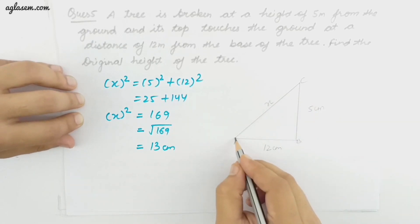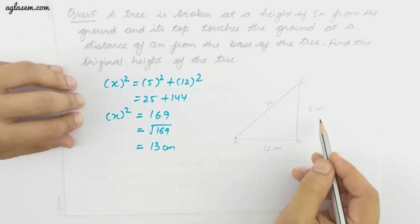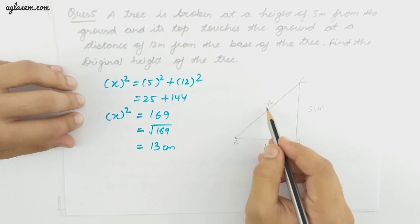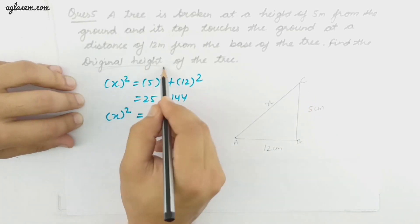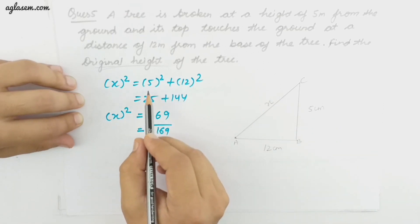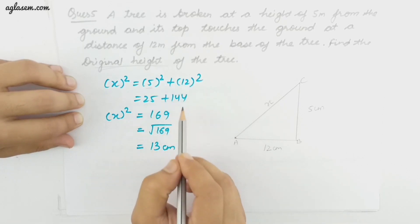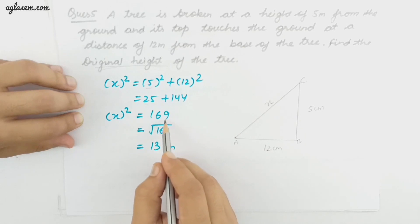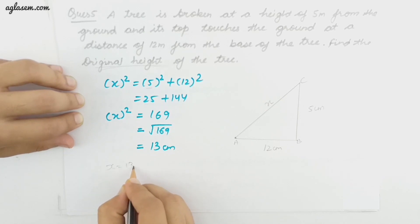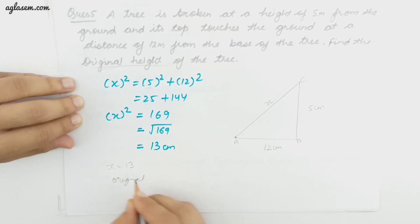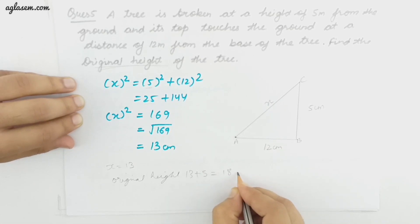The broken part and the ground form a right triangle. We use Pythagoras property: the square of 5 is 25 and the square of 12 is 144. The sum is 169, and 169 is the square of 13. So x equals 13 meters, and the original height of the tree is 13 plus 5, that is 18 meters.